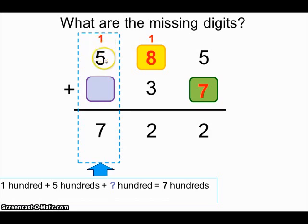1 plus 5 plus what gives me 7? It is 1! 1 plus 5 plus 1 equals 7.